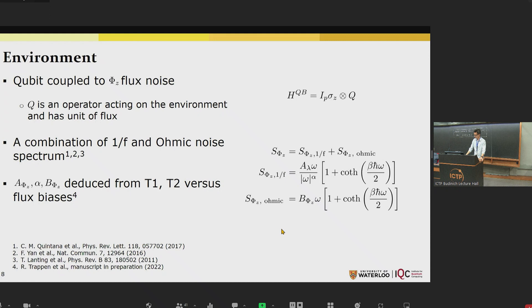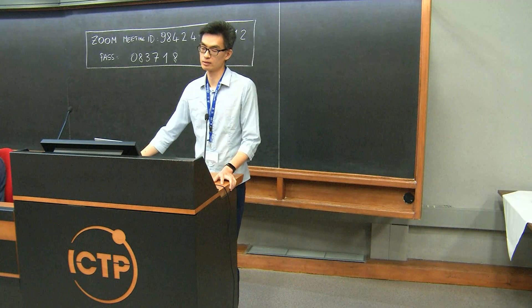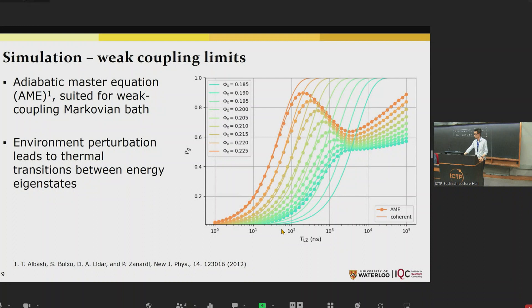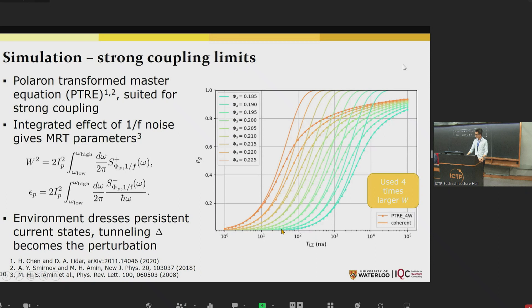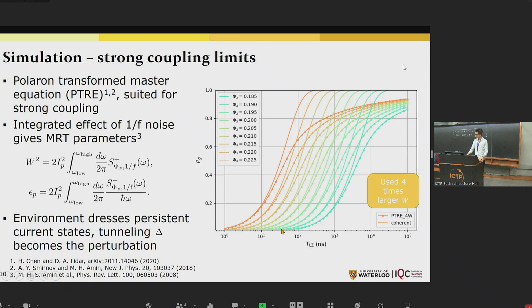First, we consider weak coupling to the environment, which can be modeled by the adiabatic master equation. In this limit, the environment acts as a perturbation leading to thermal transitions between energy eigenstates. We can see that at large phi-x, it predicts this non-monotonic dependence of P_G on T_LZ, which agrees with our experiment data. But at small phi-x, it almost plateaus near 0.5, which shows that this weak coupling limit does break down when the minimum gap is small.